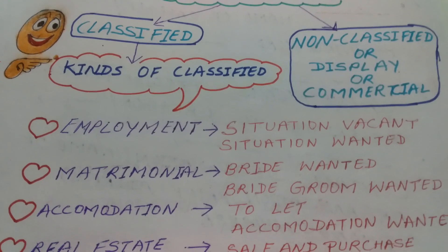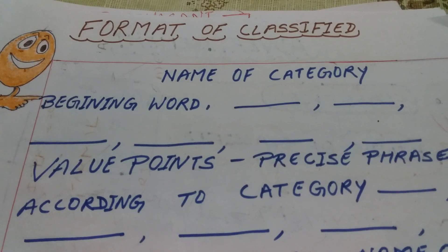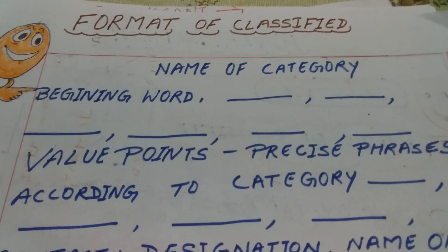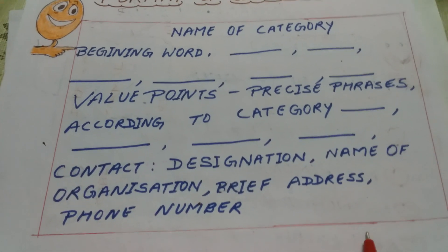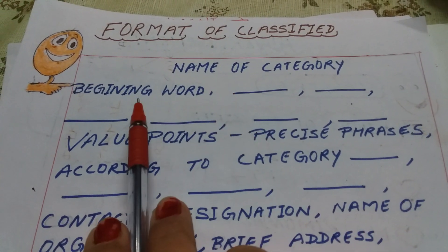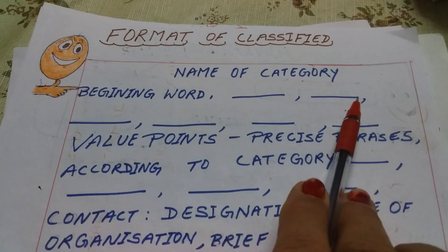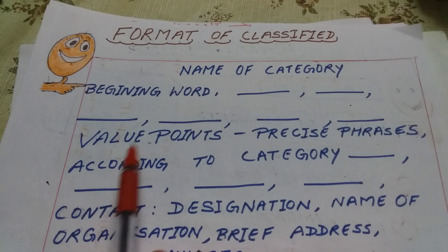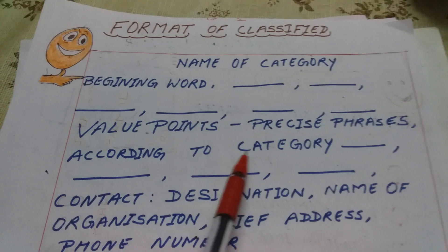Now let's see the format for situation vacant. The format of advertisement includes: first, a box is compulsory; on the top, name of the category; then the beginning word according to the category. We use phrases, not sentences. All value points according to the category should be mentioned in precise phrases, within 50 words. At the last, the contact word is written, followed by designation, name of organization, brief address, and phone number.